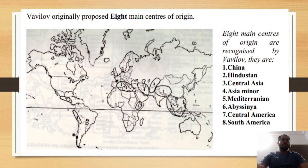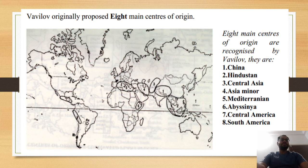In the diagram you can see: the first is China, second is Hindustan, third is Central Asia, fourth is Asia Minor, fifth is the Mediterranean region, sixth is the Abyssinian region, seventh is Central America, and eighth is South America.